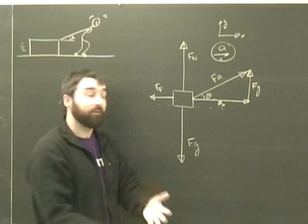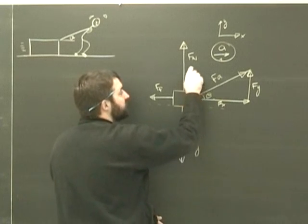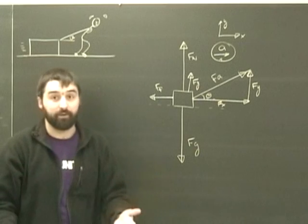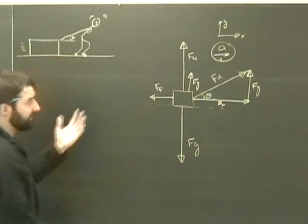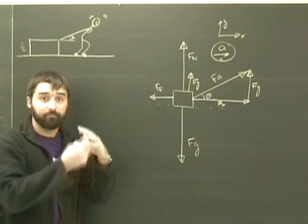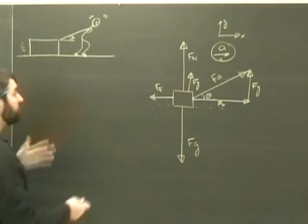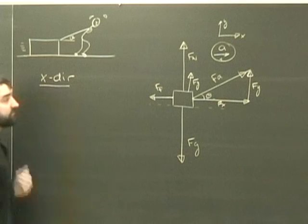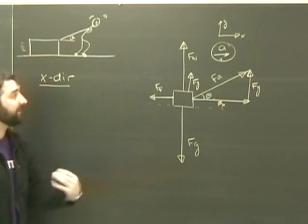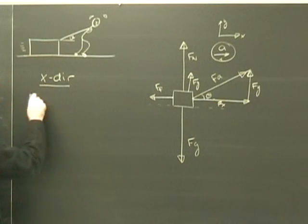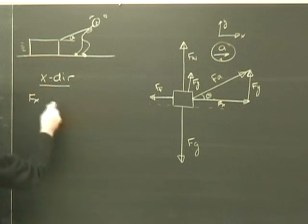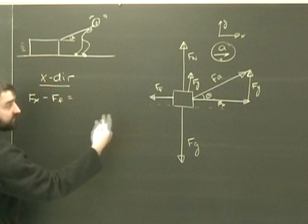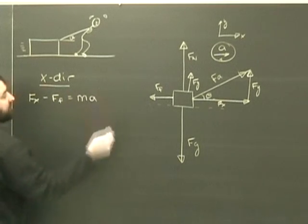Some of you might want to draw Fy over here so you don't forget about it later, and that's okay. So just like before, we're going to break them into the x and y components and do Newton's second law. In the x direction, what does Newton's second law tell us? All the forces add up to Ma. So Fx is in the positive direction, Ff is in the negative direction, and those are the only x direction forces, so they add up to Ma.